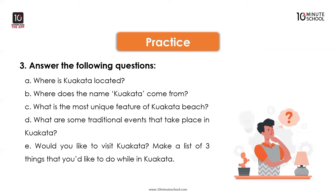Where is Kuakata located? Kuakata is located in Lota Chapli Union under Kolapara Police Station of Patuakhali District. It is 70 km from Patuakhali District Headquarters and 320 km from Dhaka. What does the name Kuakata come from? The name Kuakata comes from a well dug on the seashore by the early Rakhine settlers in quest of collecting drinking water, who landed on Kuakata coast after being expelled from Arakan by the Mughals.